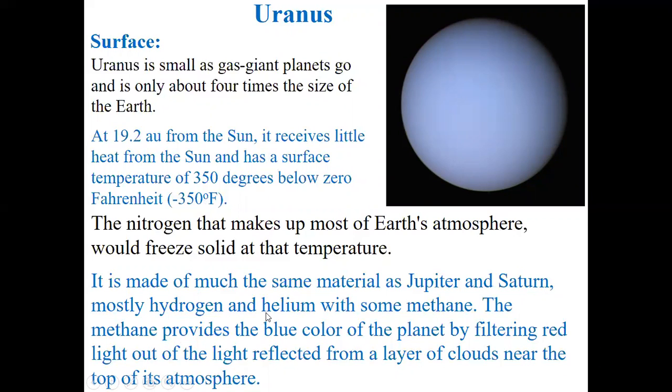It's made of much the same material as Jupiter and Saturn, mostly hydrogen and helium with some methane. This methane provides the blue color of this planet by filtering red light out of the light reflected from a layer of clouds near the top of its atmosphere. Like how we get blue color and red color in the sky by scattering, because of this presence of methane, the blue color can survive. That's why we can see the planet in blue color.